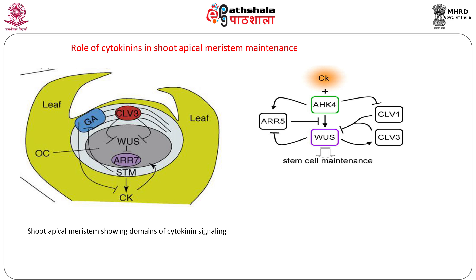Cytokinins also have an important role in shoot apical meristem maintenance. By regulating the cell cycle and promoting cell division, cytokinins play an important role in forming and maintaining the function of the shoot apical meristem. Through phosphotransfer, cytokinins bring about transcriptional regulation of the WUSCHEL gene, which is expressed in the organizing centre of the shoot apical meristem.